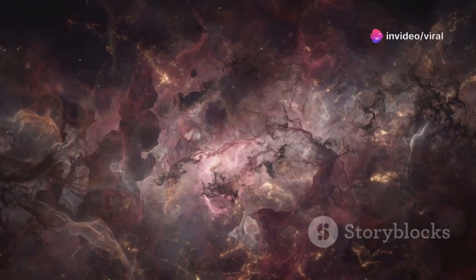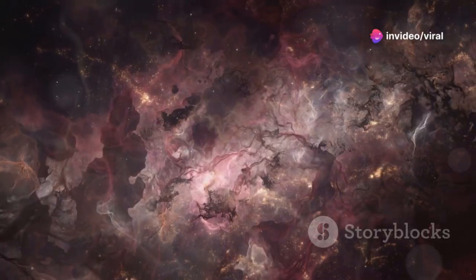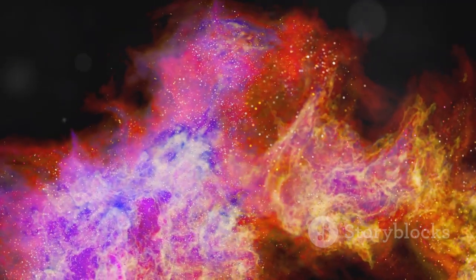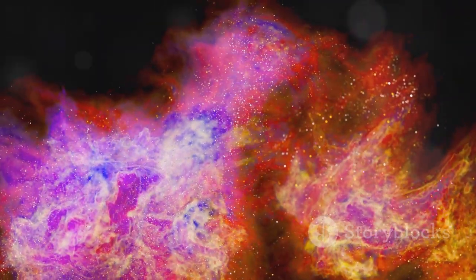Webb was designed to see the universe in infrared, the light of heat, of ancient things, invisible to our eyes but rich with secrets. This ability allows it to peer through cosmic dust, revealing the birthplaces of stars and planets, and to look further back in time than any telescope before it.